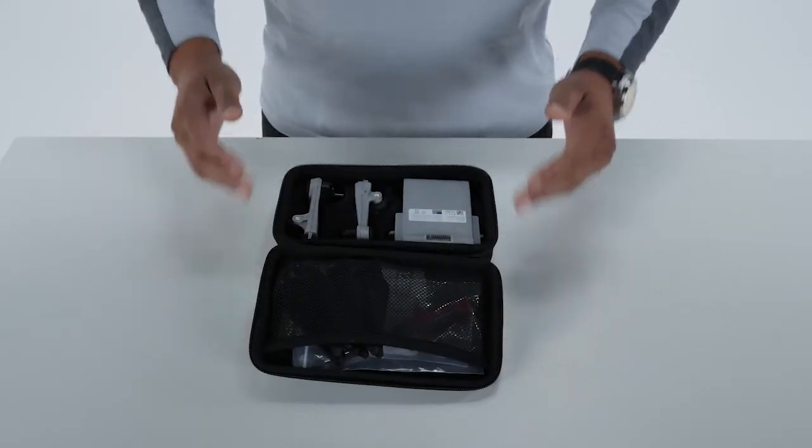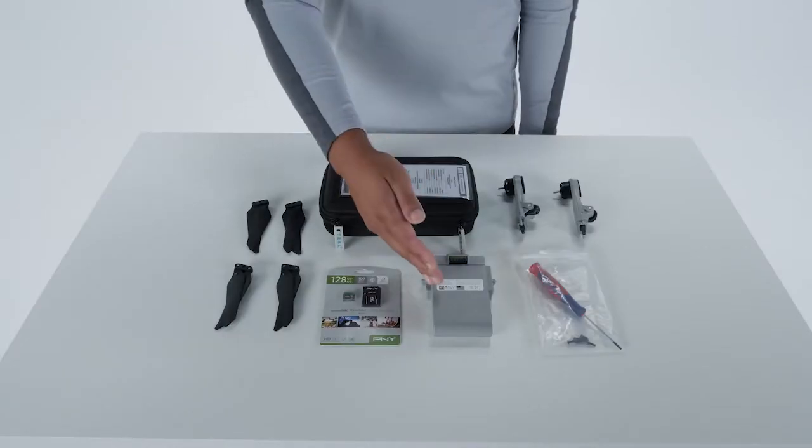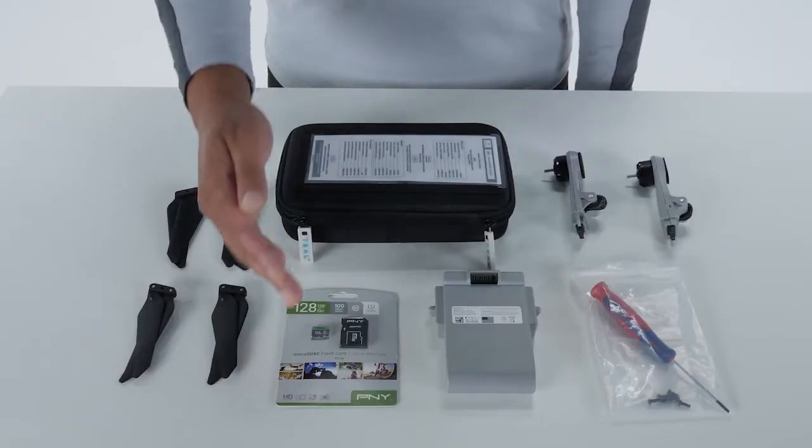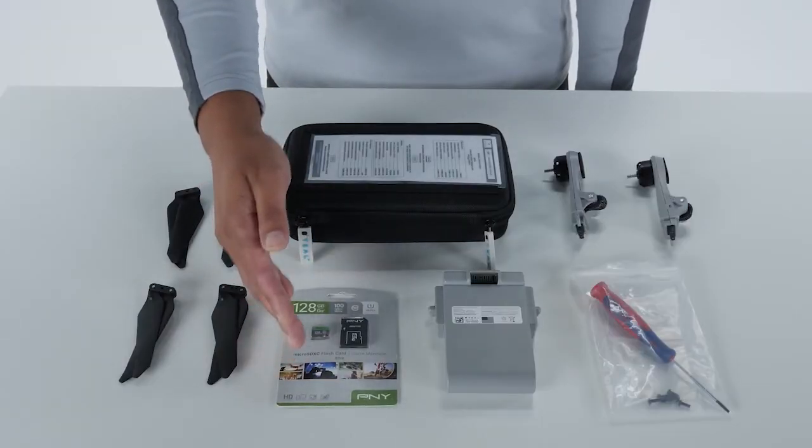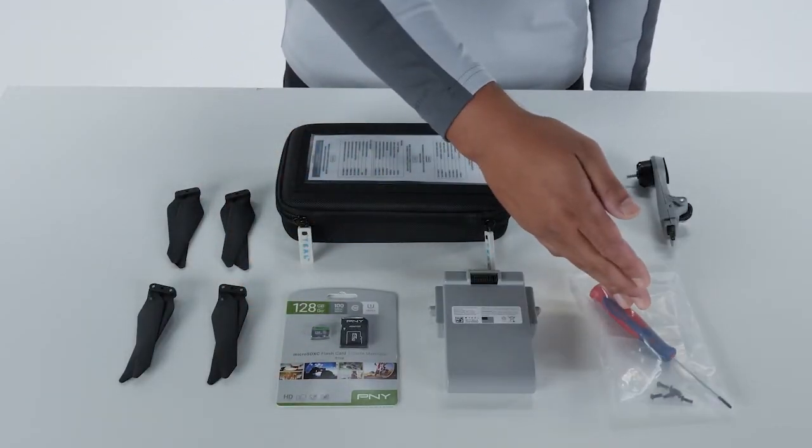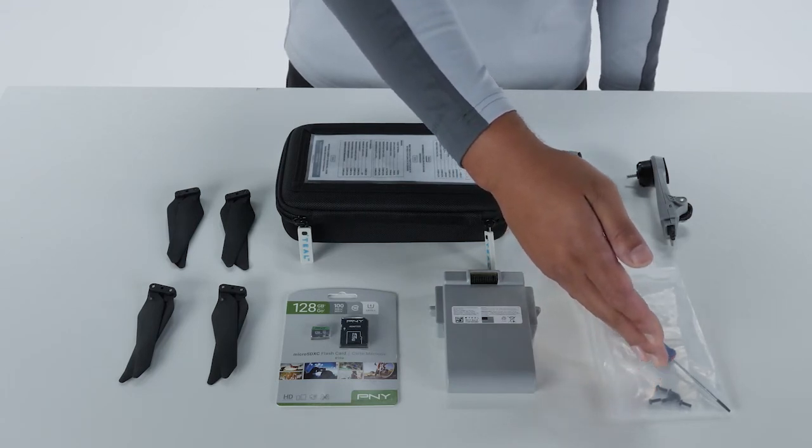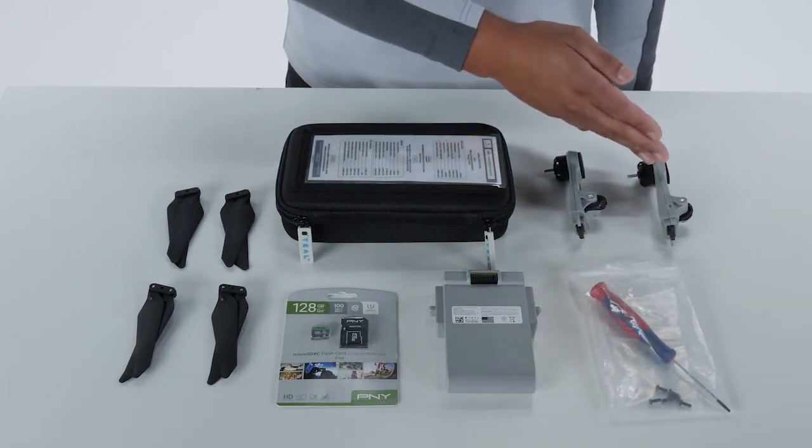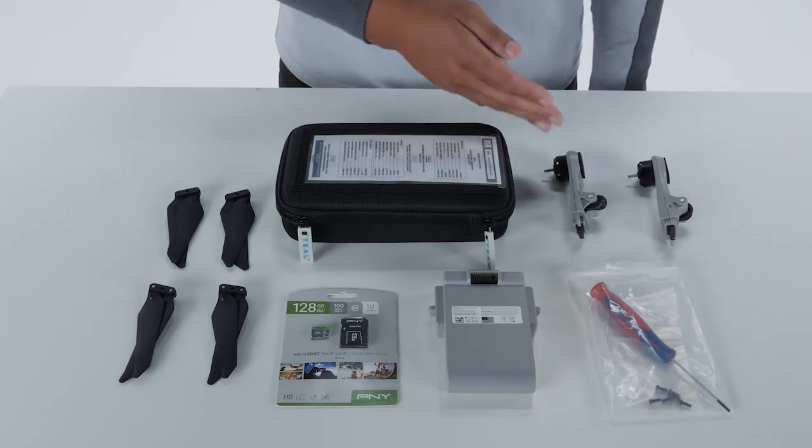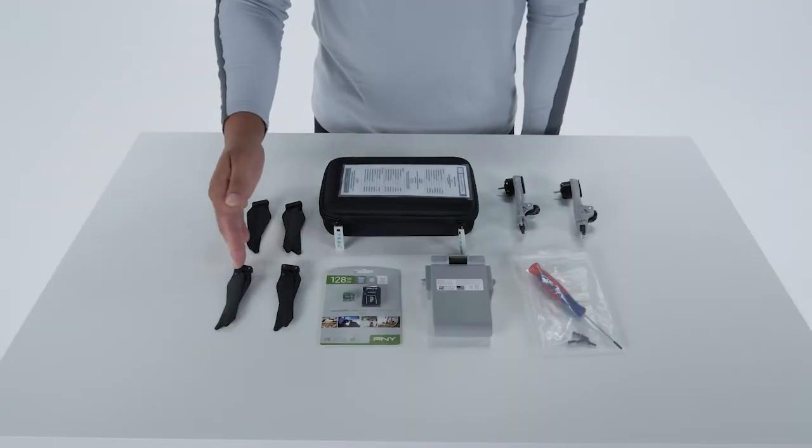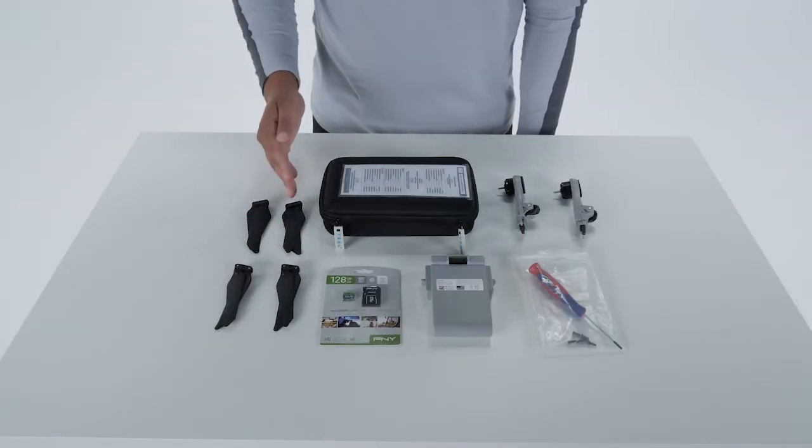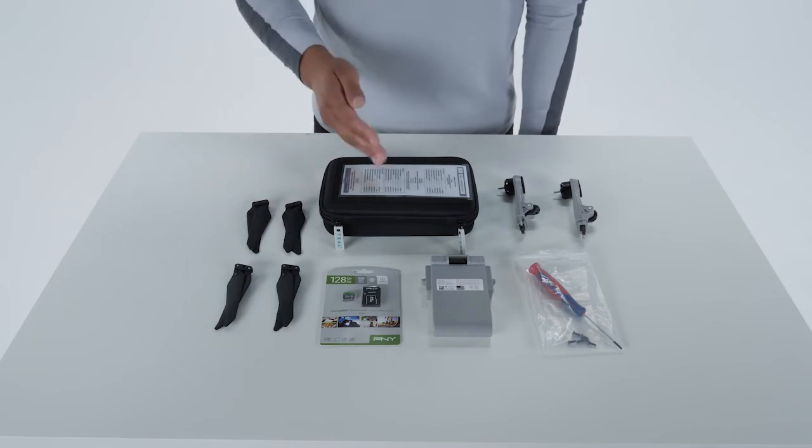Inside the tactical spare kit case, you will find the following items: one spare performance battery, a 128 gigabyte micro SD card, one Torx T8 screwdriver, six spare Torx arm attachment screws, one spare clockwise arm, one spare counterclockwise arm, two spare clockwise props, two spare counterclockwise props, and one quick reference card.